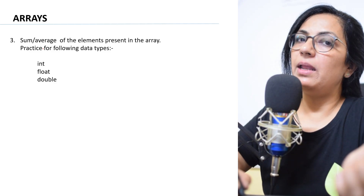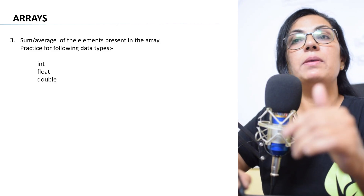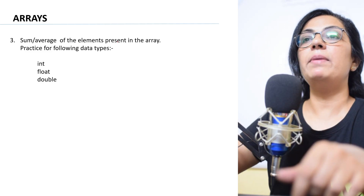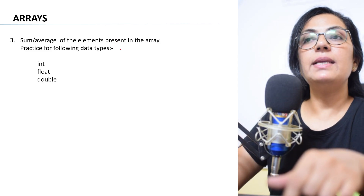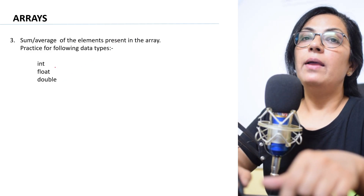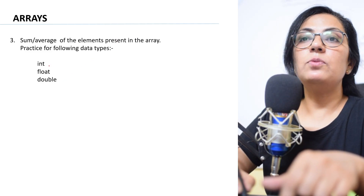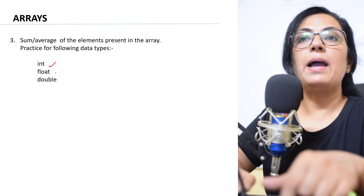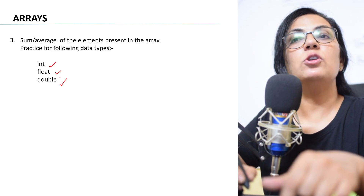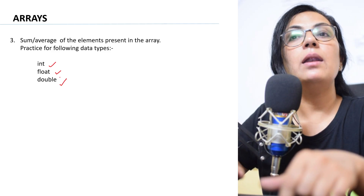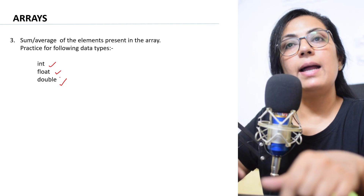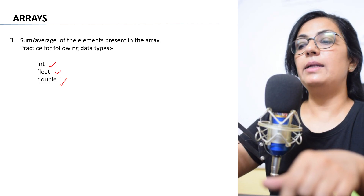The third type of question you need to prepare is sum or average — it may be sum and average together, or only sum of the elements, or only the average of the elements present in the given array. The data types you need to practice for this type of question are int, float, and double.